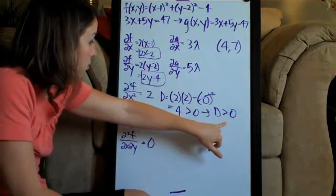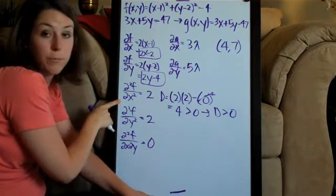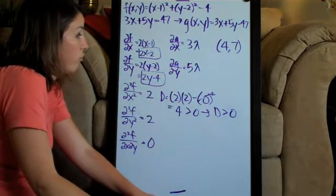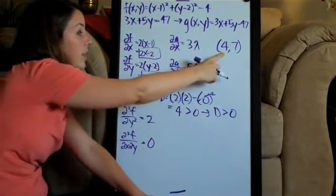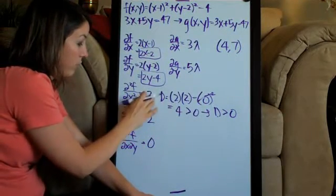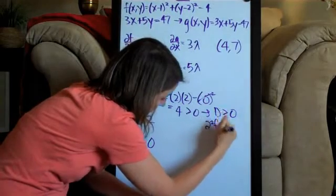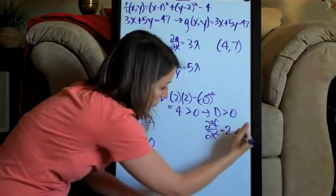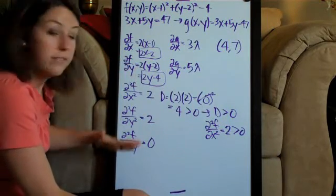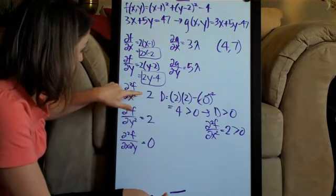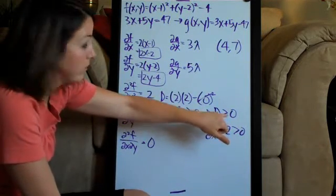Since D is greater than zero, the only other thing we need to determine is whether the second-order partial derivative with respect to x at the point (4, 7) is greater than or less than zero. Normally we'd plug in x = 4 and y = 7, but in this case there are no variables left, so we just use fxx = 2. Since 2 is greater than zero, both conditions are satisfied.